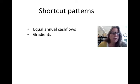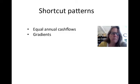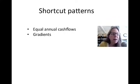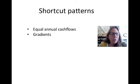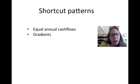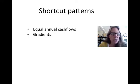This video is going to talk about shortcuts to using our favorite equation of F equals P times 1 plus I to the N. There are a couple shortcuts developed by people in engineering economy: one is looking at patterns associated with cash flows, and the second is looking up values in a table so that you don't have to do a bunch of complex calculations.